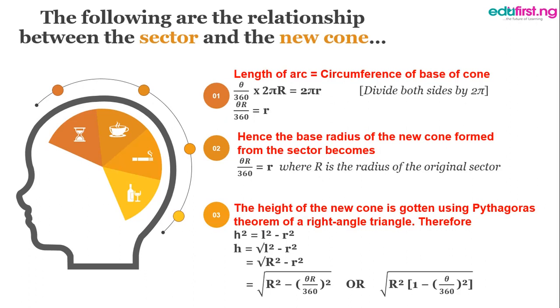Also note that the height of the new cone is gotten using Pythagoras theorem. Therefore, from our diagram of the cone, we have that H squared, which is the height of the cone, is giving us L squared minus r squared. Therefore, H is going to be the square root of L squared minus r squared.